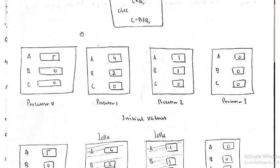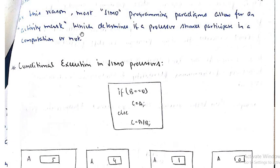The topic is straightforward: a single control unit means SIMD, while multiple control units with individual processors is MIMD. That is all for this video. Thank you very much.